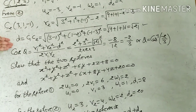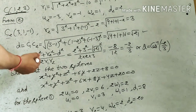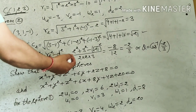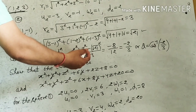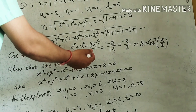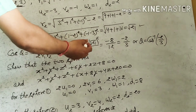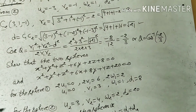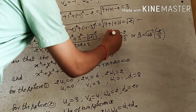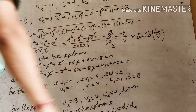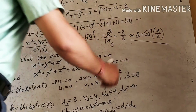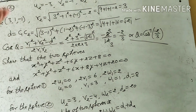Now we have R1 = 2, R2 = 3, and D = √21. Using the formula cos θ = (R1² + R2² − D²) / (2R1R2): cos θ = (4 + 9 − 21) / (2×2×3) = −8/12 = −2/3. Therefore θ = cos⁻¹(−2/3), which is the angle of intersection of the two spheres.